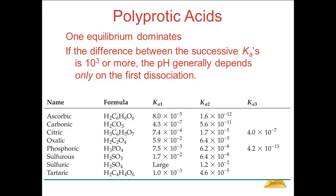In the case of phosphoric acid, for example, the first Ka is more than 10 to the fifth times larger than the second, and the second more than 10 to the fifth times the third. So the equilibrium will be dominated by the first dissociation. For polyprotic acids, it is extremely important to identify which particular K applies to the particular problem we are working on.